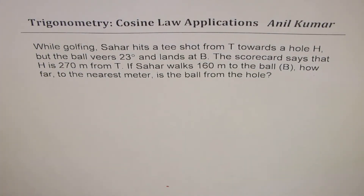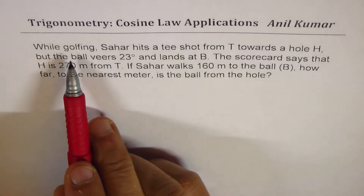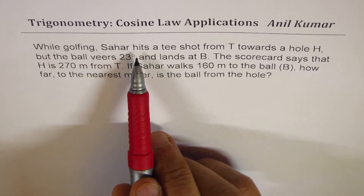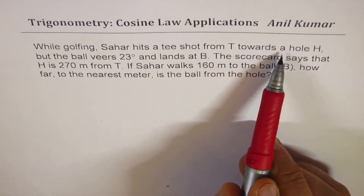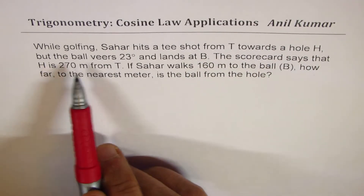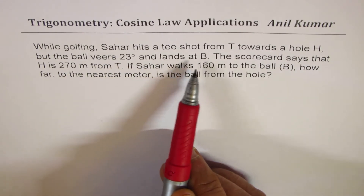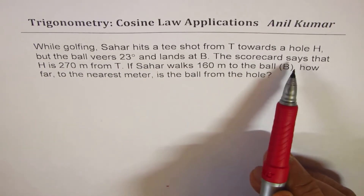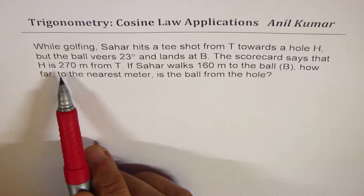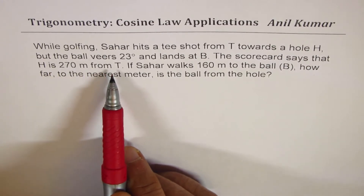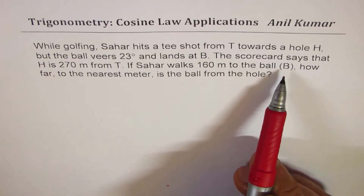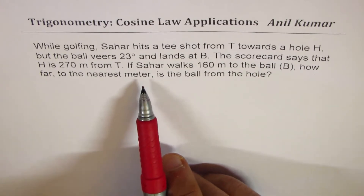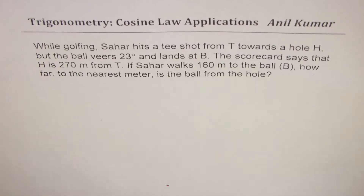I'm Anil Kumar sharing with you an application question on cosine law. While golfing, Sahar hits a tee shot from tee T towards a hole H, but the ball veers 23 degrees and lands at B. The scorecard says that H is 270 meters from T. If Sahar walks 160 meters to the ball B, how far to the nearest meter is the ball from the hole?